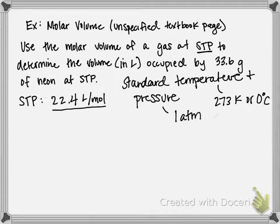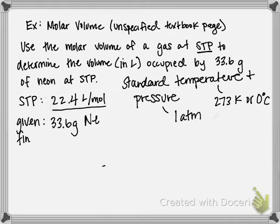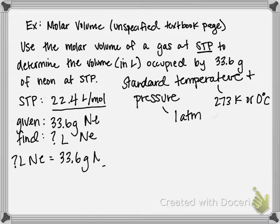In this problem, we are given 33.6 grams of neon, and we know this conversion factor of molar volume: there are 22.4 liters of volume in one mole at STP. We are trying to find the amount of liters of this neon. We're given 33.6 grams, and in order to use my molar volume of 22.4 liters per mole, I need to convert my neon gram amount into a mole amount.